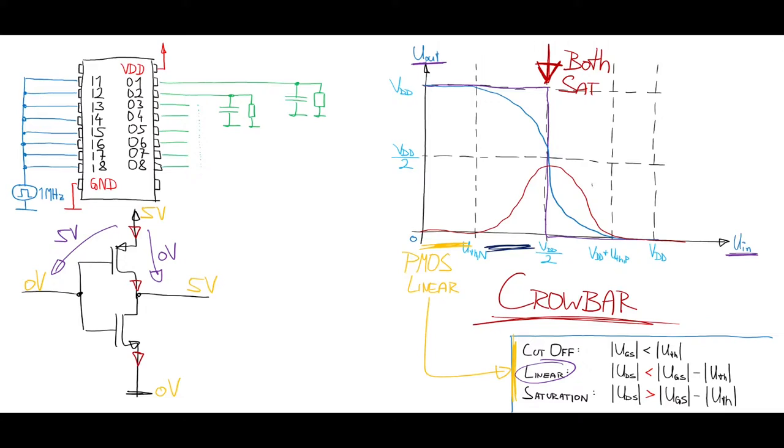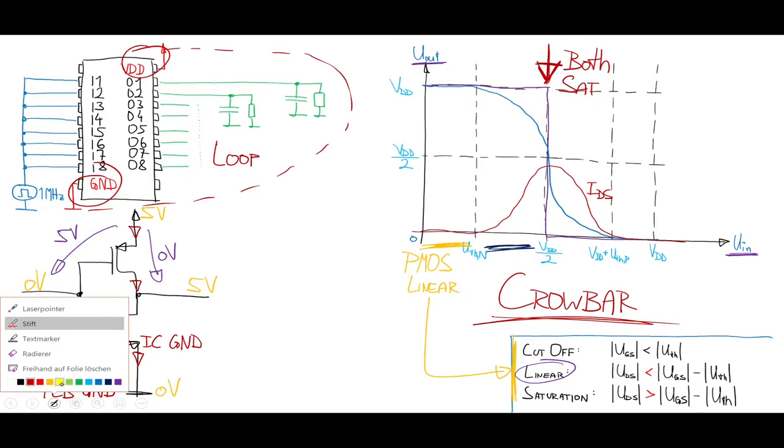Ground bouncing now describes the phenomena when the ground of the IC differs from the ground of the PCB. This is mainly caused by the bond wires of the chip. As we can see here, VDD and ground contact are placed in the worst possible way because the loop area between those is big. This causes a high inductance at the ground pin but at the VDD pin as well.